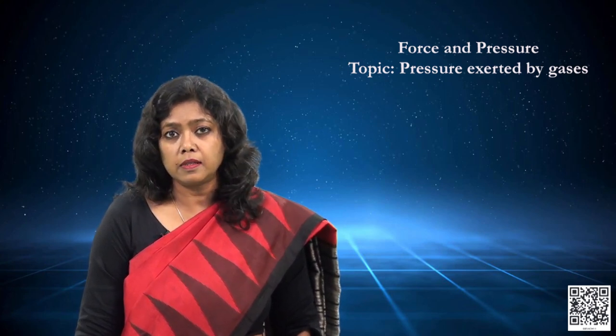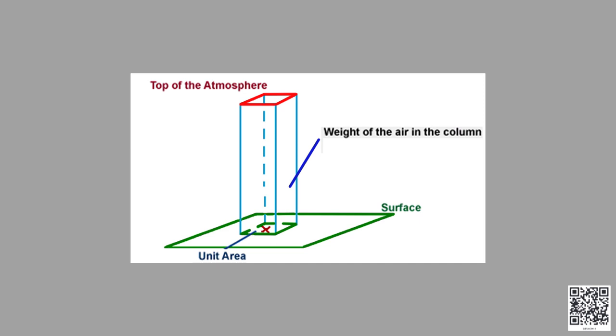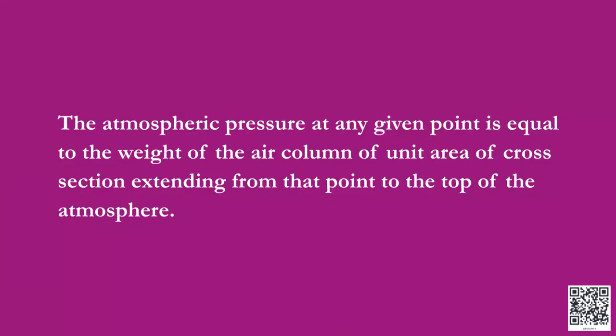The reason behind atmospheric pressure is the column of air present above the surface. Consider a point X on a surface. Imagine an air column of unit area of cross-section extending from point X to the top of the atmosphere. This column of air will have a certain weight. The atmospheric pressure at any given point equals the weight of the air column of unit area of cross-section extending from that point to the top of the atmosphere.